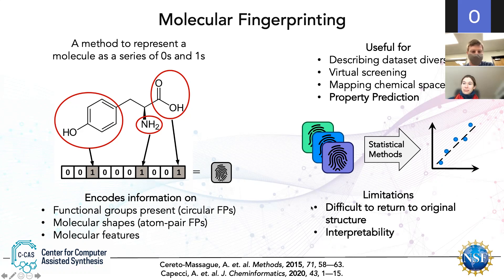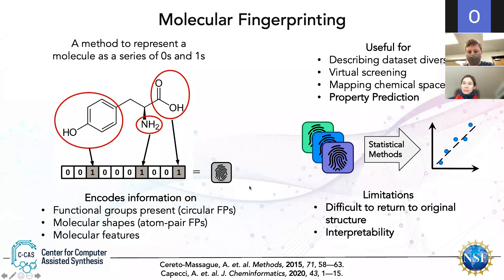Some general limitations: once you have these bitwise vectors, it can be difficult or sometimes impossible to return them to the original structure, because you're breaking molecules down into set pieces. There's also a question of interpretability, though this can actually be useful — if a specific fingerprint vector is important in your model, you might be able to see why that functional group is impacting yield or selectivity.